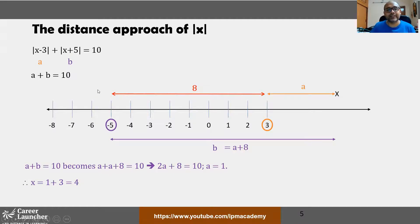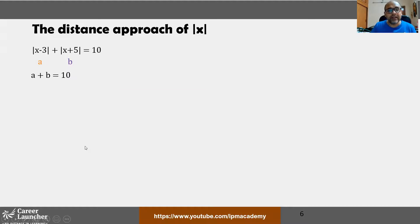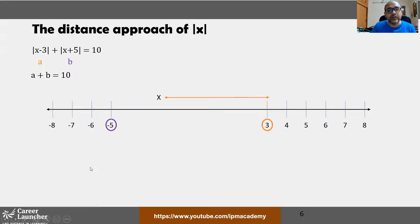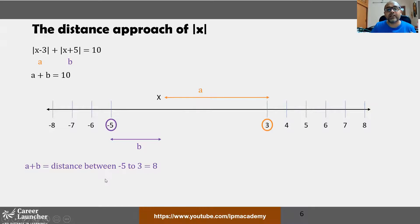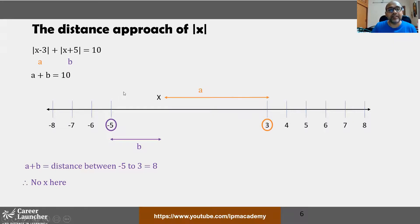Case 2: x lies in the middle region, between -5 and 3. Here the distance from x to 3 is 'a' and the distance from x to -5 is 'b'. Geometrically, a + b equals the total distance between the two boundary points, which is 8. But we need a + b = 10, and 8 ≠ 10, so there is no solution in this region.